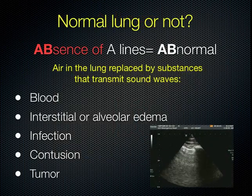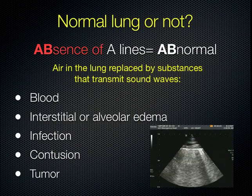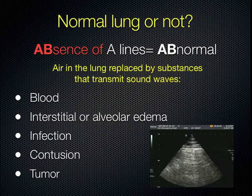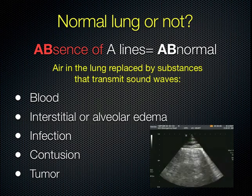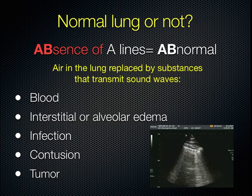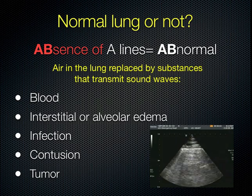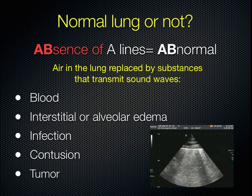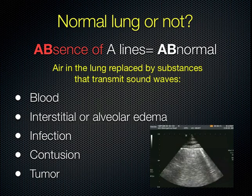Once you've noted whether there are A lines, we move on to B lines. If you have absence of A lines, we think something is abnormal — A lines should be present in normally aerated lung. If they are not there, then something in the lung has replaced the air, and that something can be anything from blood to alveolar edema, infection, contusion, or tumor.